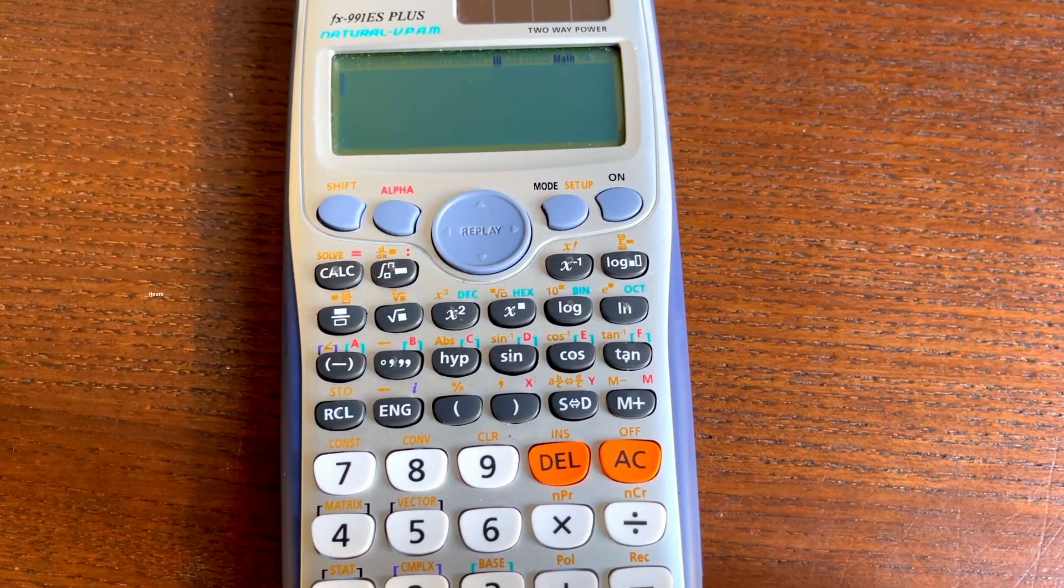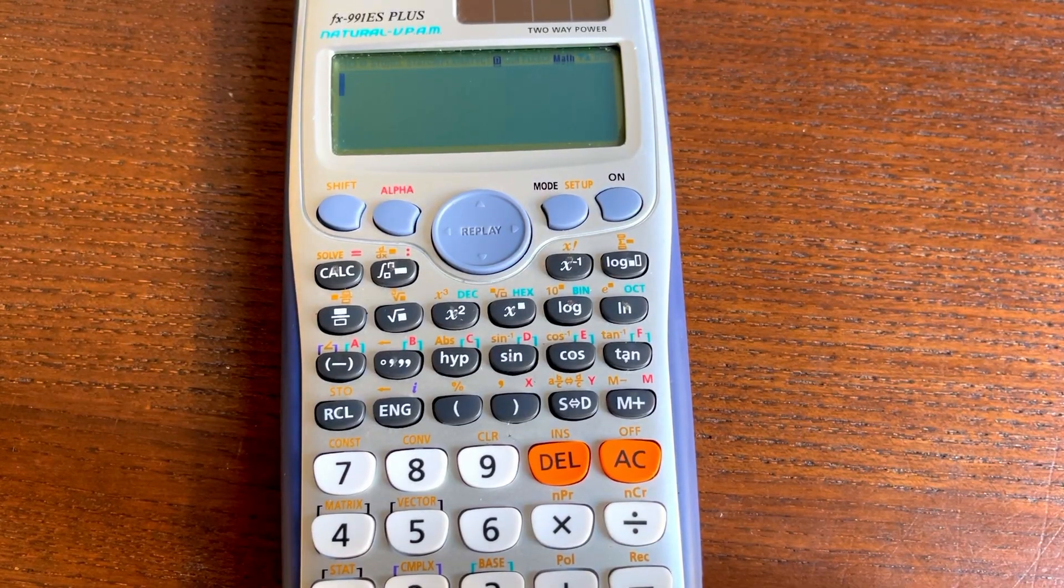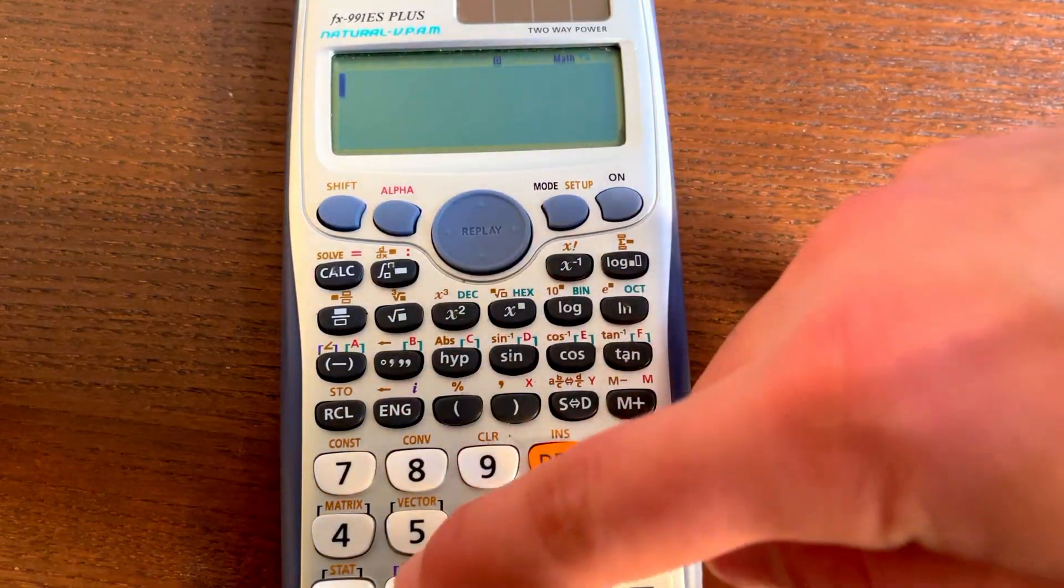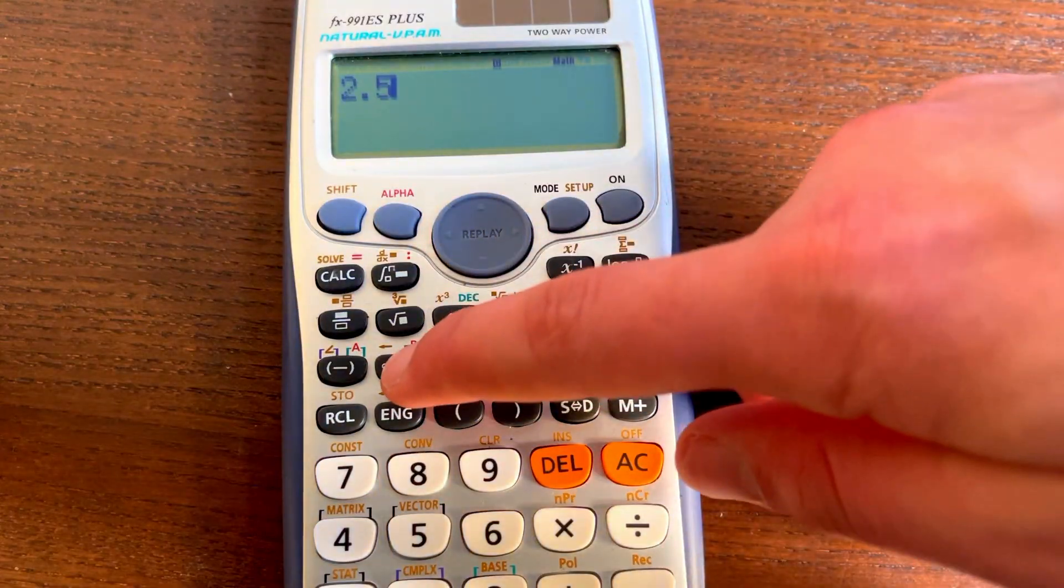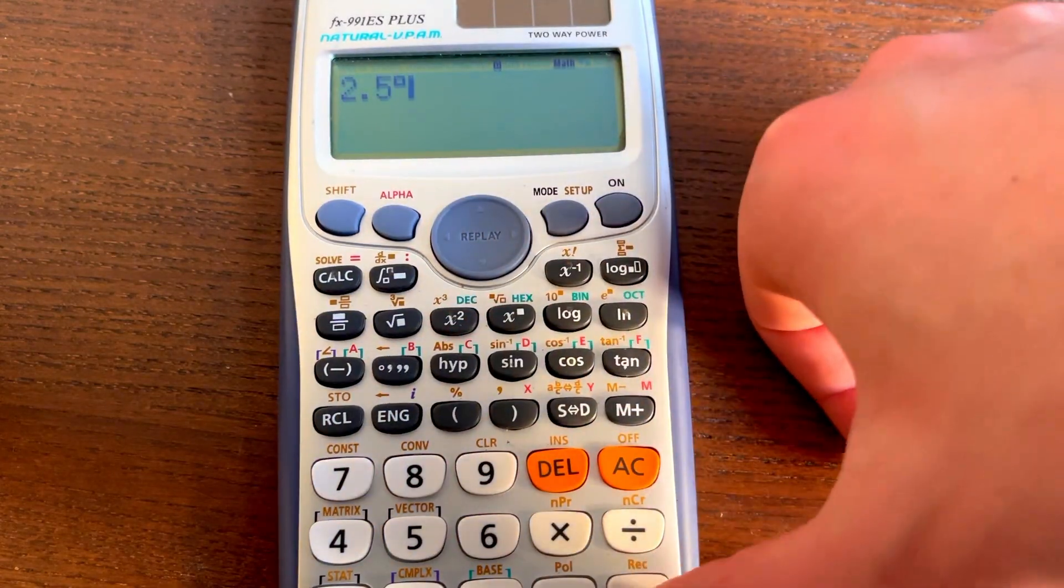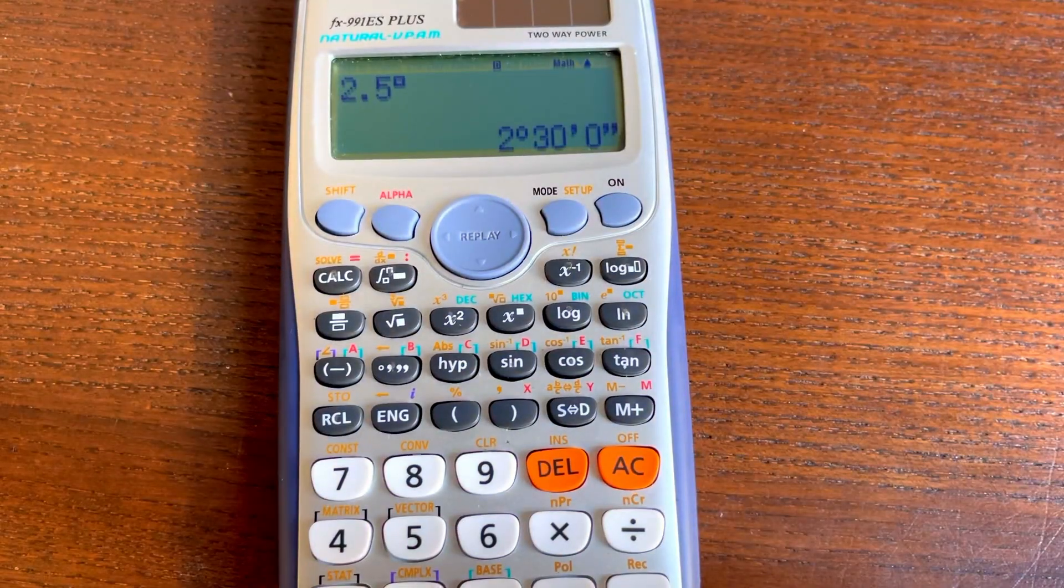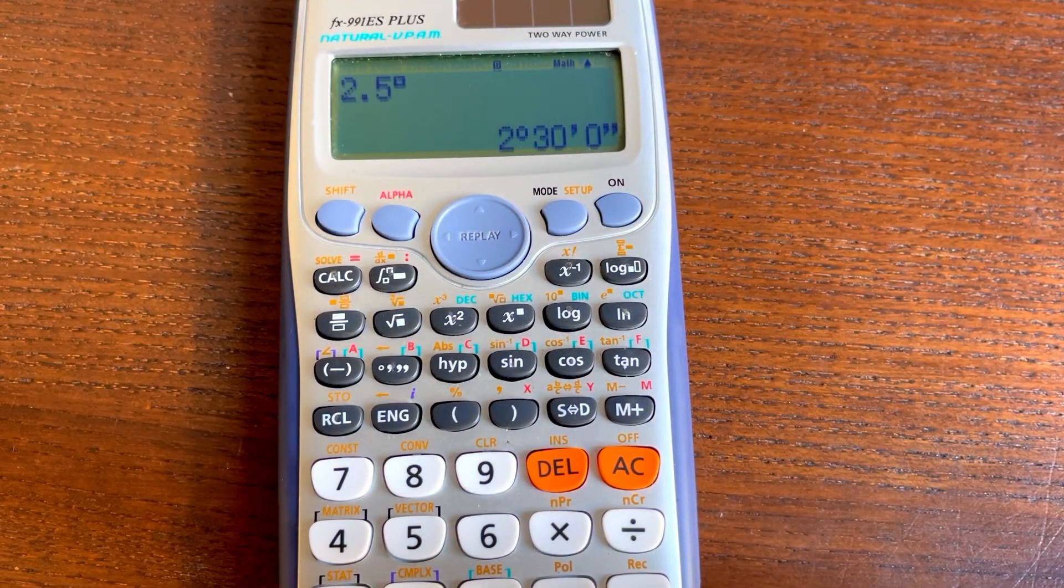The first tip I have for you guys is converting from hours to hours, minutes and seconds. So for example, if I had 2.5 hours, I can click this button right here and then click equals and it gives me 2 hours, 30 minutes and 0 seconds.